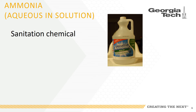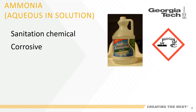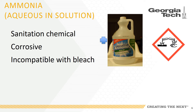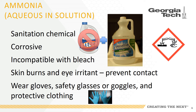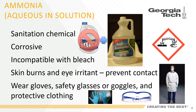Ammonia in water is another sanitation chemical that is corrosive. Ammonia should never be used with or near bleach as it produces toxic gases, which could be deadly to breathe. Prevent skin and eye contact with ammonia solutions by wearing gloves, safety glasses or goggles, and protective clothing.